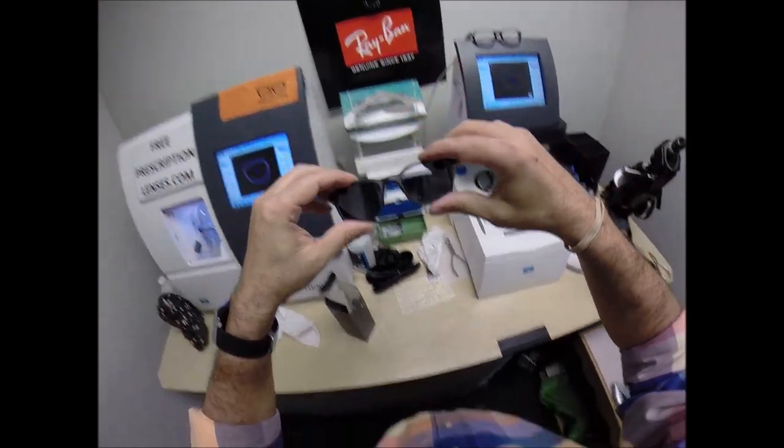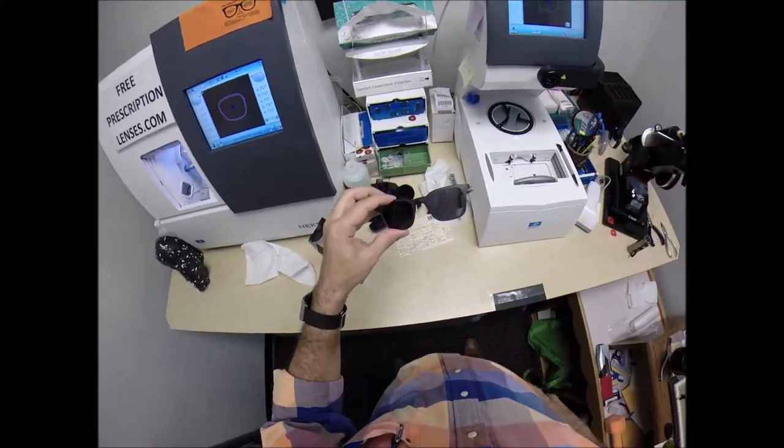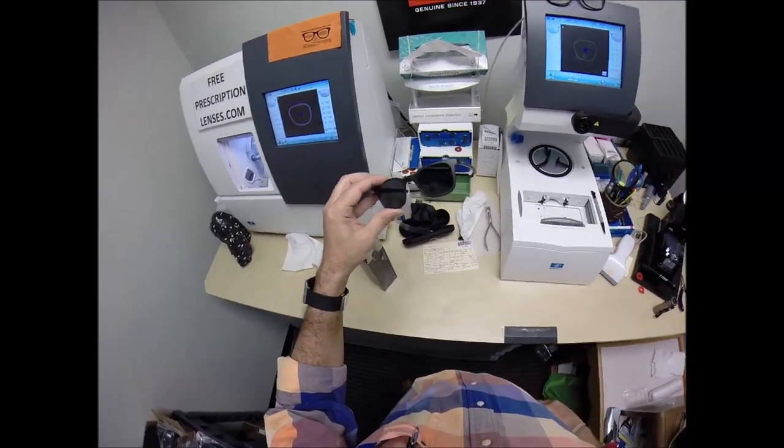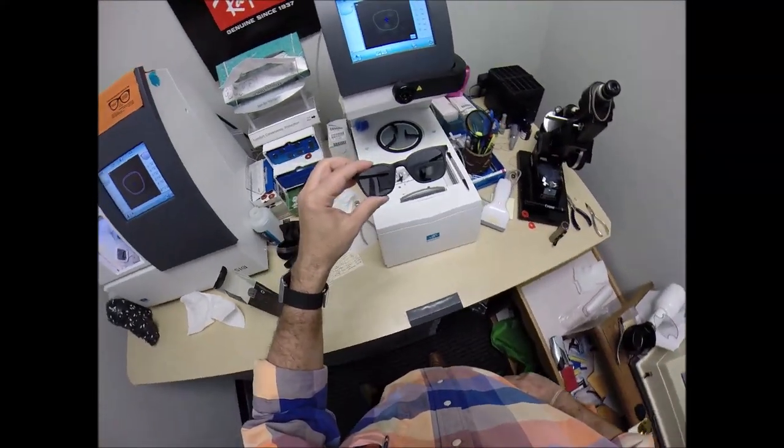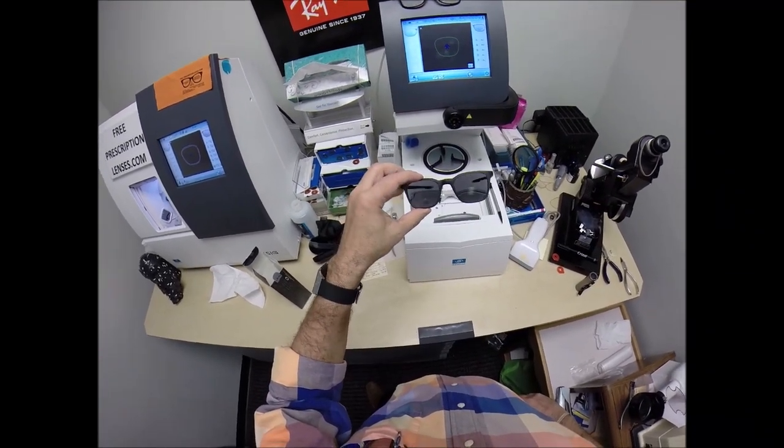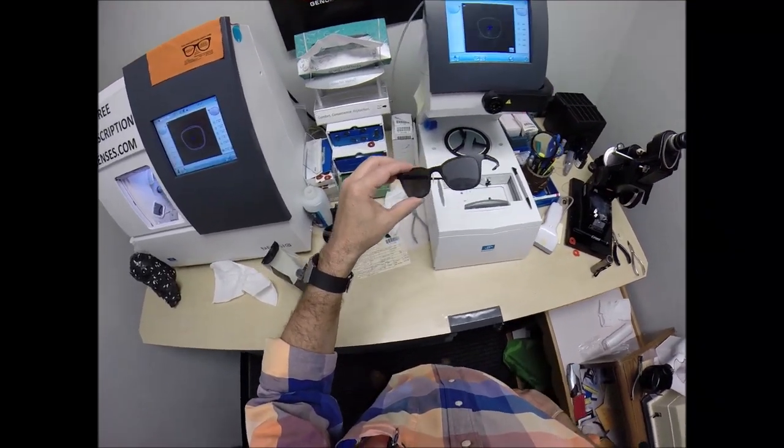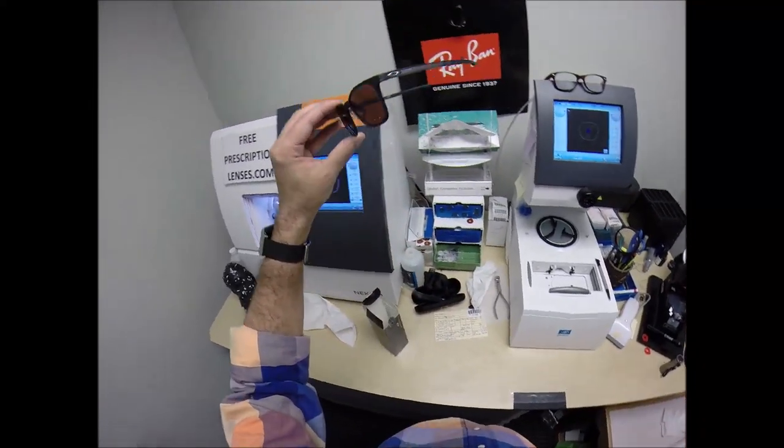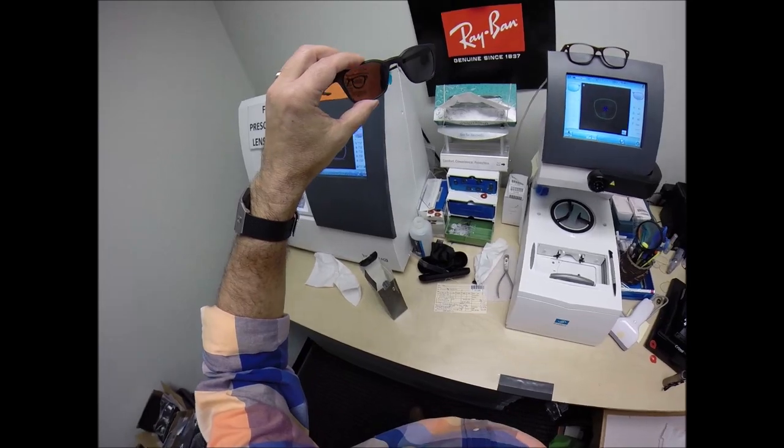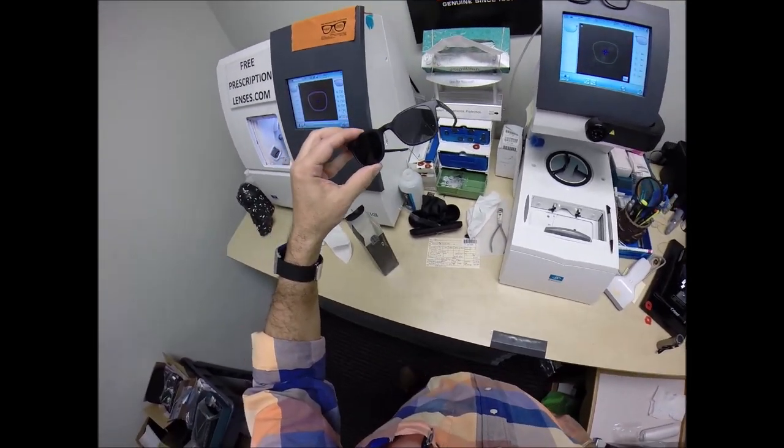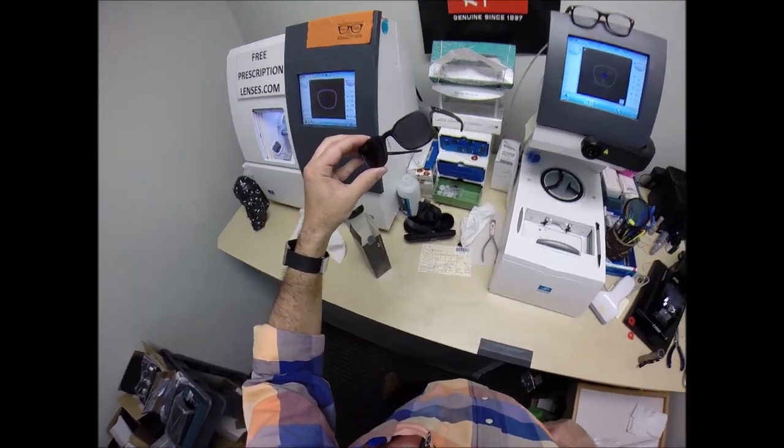But now there is the newer lens that you've been seeing a lot of in my videos called the transitions extra active. They will get 30 to 50% dark behind the windshield. They will also get darker and hotter weather for those people who live in Florida, California, Texas, anyone who is in or overseas in a hotter climates. You may want to think about the transitions extra active with being in Fargo, North Dakota. I don't think you have to worry about getting 100 degrees too many days out of the year.